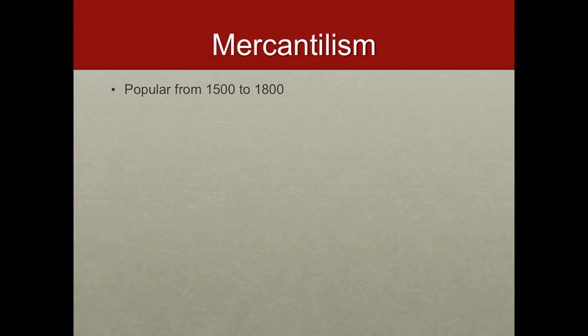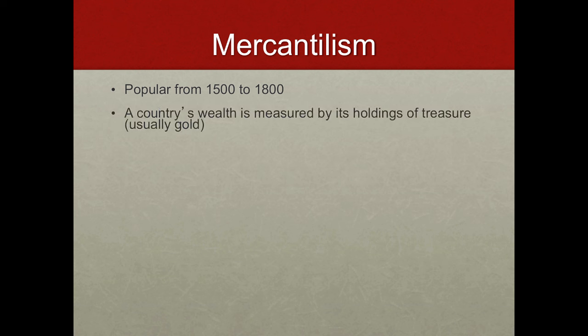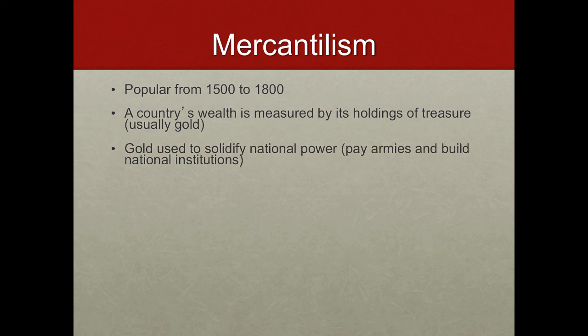Some of the ideas of mercantilism are actually still around, as I'll highlight in just a moment. The basic idea with mercantilism starts with a definition of wealth. The definition of wealth under mercantilism is that the total wealth of a country is measured in its holdings of gold, primarily, or certain kinds of treasure. Gold and surplus are important as a basis for national power, because they are used to pay for armies or build up national institutions.